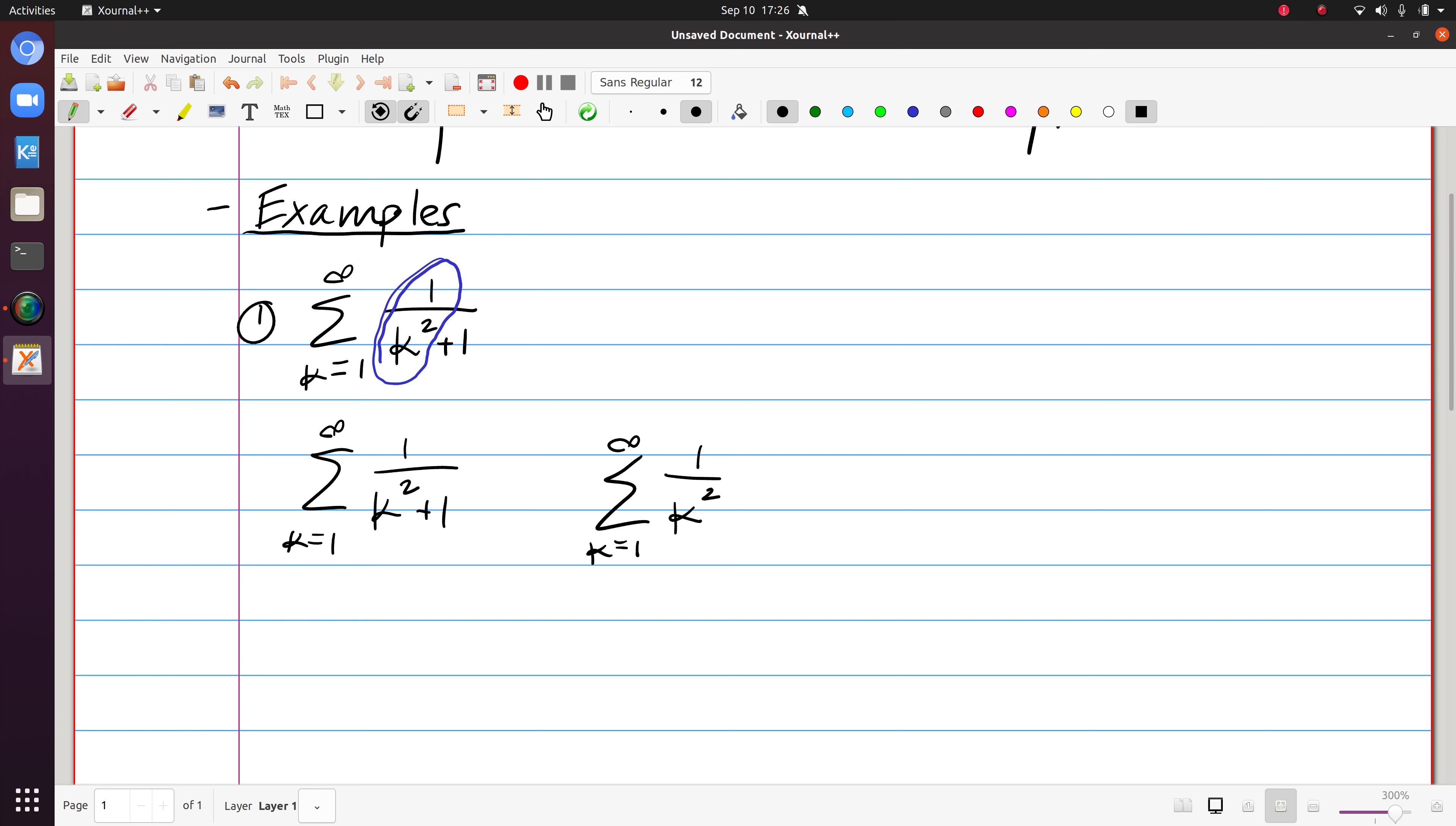Consequently, each term on the left is going to be bounded above by each term on the right. And therefore the series on the left is bounded above by the one on the right. So I have that my series is bounded above by the p-series where p is equal to 2.